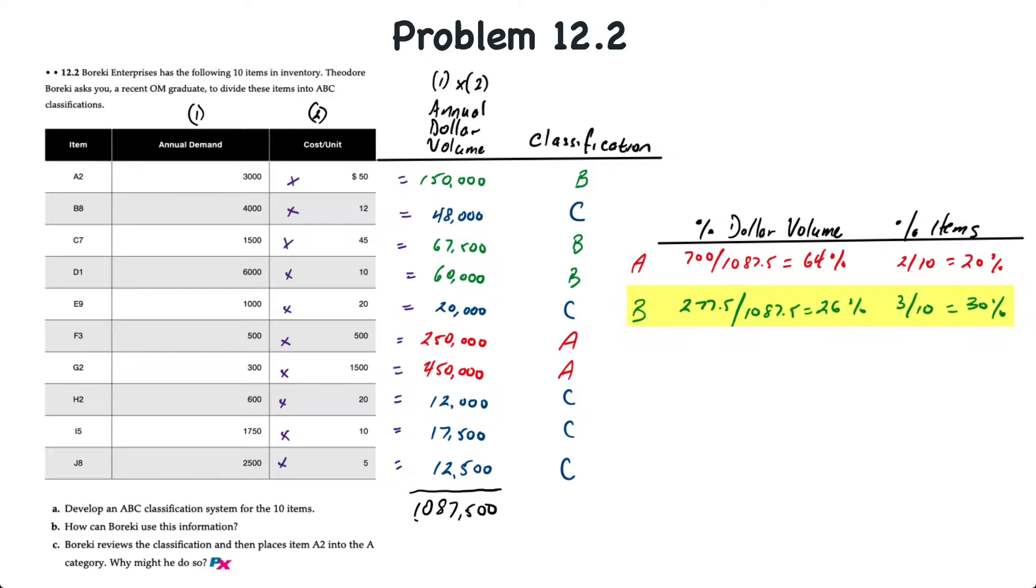If we look at level B items, there's three of them, so that's 30%, and they sum up to $277,500, and that's a total of 26%. So for B-level items, 30% of the items contribute to 26% of the annual sales volume. The remaining C-level items, you see that there's five of them, so that's 50% of the items, but they contribute only 10%, or $110,000, of the total annual sales volume.